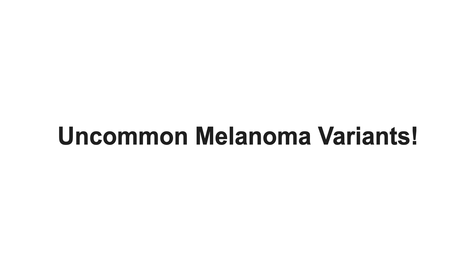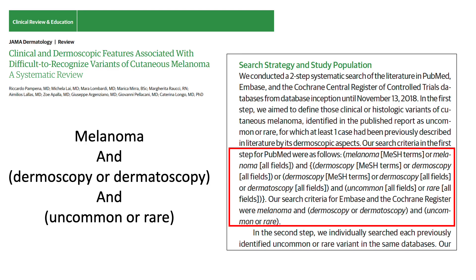What we will do in the following minutes is to focus on uncommon melanoma variants. These variants are indeed by definition difficult to recognize, since only few cases have been described in the literature so far. To fill this gap, we recently published a systematic review including all the published cases of uncommon melanomas — 433 from 62 studies — plus 56 new unpublished cases.